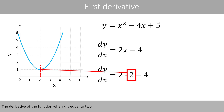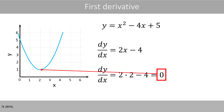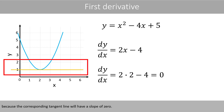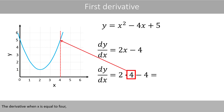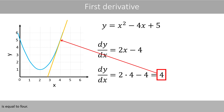The derivative of the function when x is equal to 2 is 0, because the corresponding tangent line will have a slope of 0. The derivative when x is equal to 4 is equal to 4.